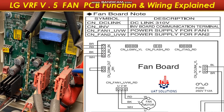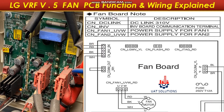Basic function of fan board is to run the condenser fan motor at variable speed. The fan speed is determined using the discharge temperature and pressure. The main PCB monitors the pressure and sends signal to inverter board, and inverter board sends commands accordingly to the fan board to run the fan on required speed.